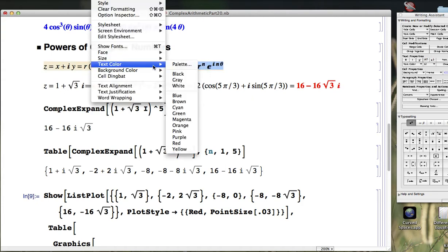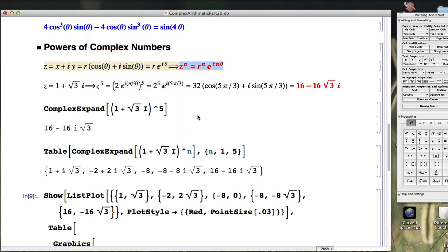So if z was equal to r times e to the i theta, then z to the n can be written as r to the n, the modulus raised to the n power, times e to the i n theta. Take the theta, the argument of the complex number, and add it to itself n times if n is a positive integer, effectively multiplying it by n.